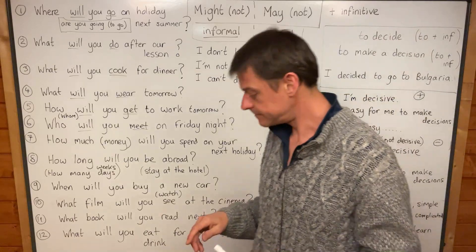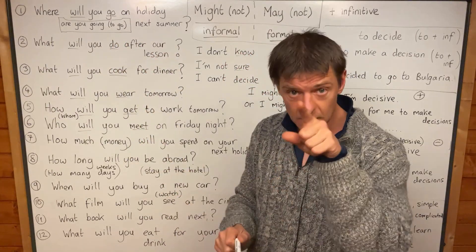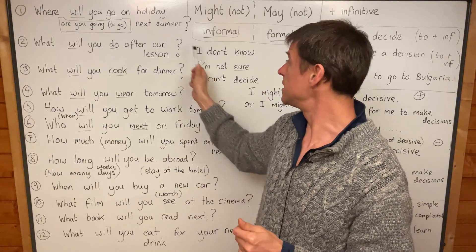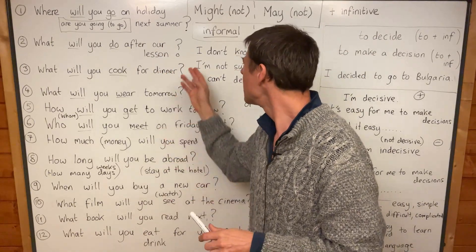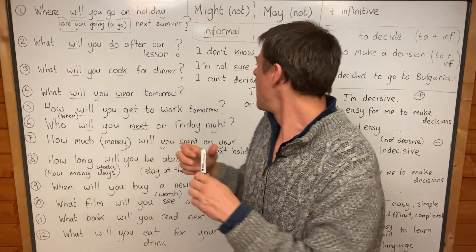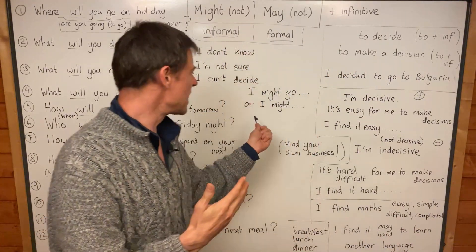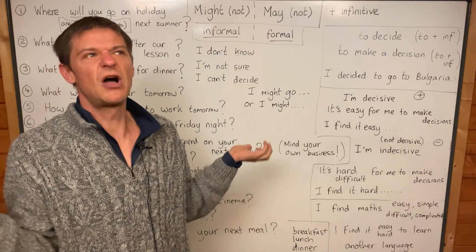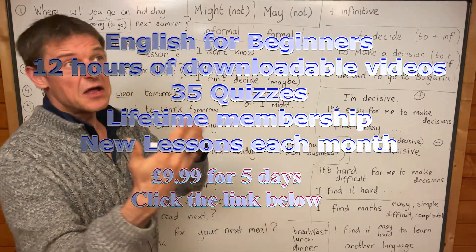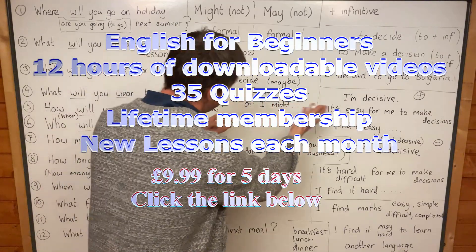For example, where will you go on holiday next summer? Do you know where you will go on holiday next summer? I don't know. I might go to Spain or I might go to France. I don't know. So might means maybe — maybe I will go to Spain or maybe I will go to France.